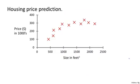Let's say you want to predict housing prices. A while back a student collected a dataset from the city of Portland, Oregon, and let's say you plot the dataset and it looks like this. Here on the horizontal axis is the size of different houses in square feet, and on the vertical axis the prices of different houses in thousands of dollars. Given this data, let's say you have a friend who owns a house that is 750 square feet and they're hoping to sell the house and want to know how much they can get for it.